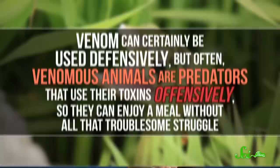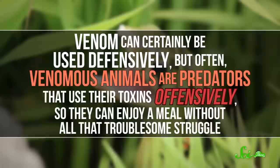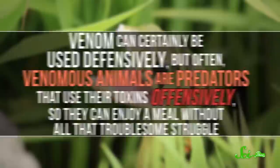Venoms, on the other hand, are actively injected into the body, like via a pair of pointy snake fangs, for example. Venom can certainly be used defensively, but often venomous animals are predators that use their toxins offensively, so they can enjoy a meal without all that troublesome struggle. Since venoms and poisons tend to be used differently, they usually contain different kinds of toxins.